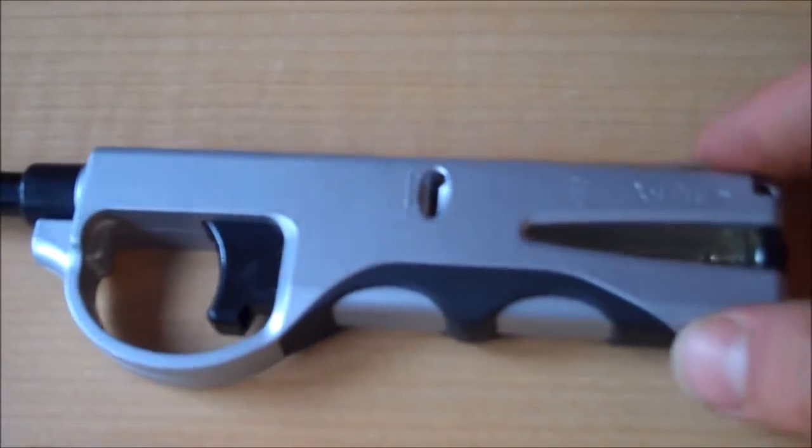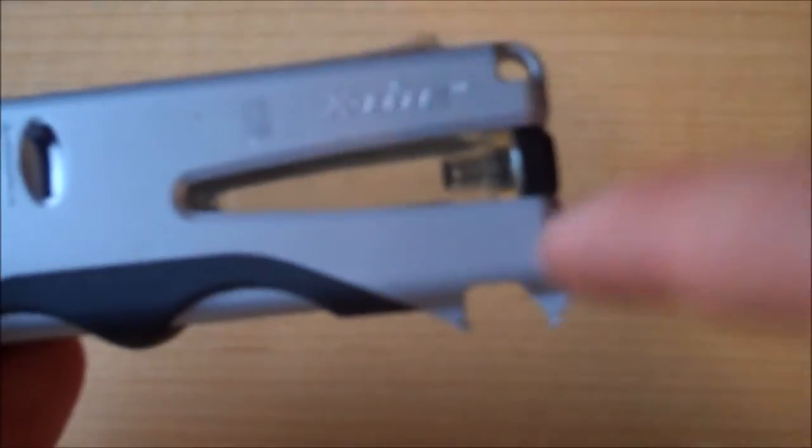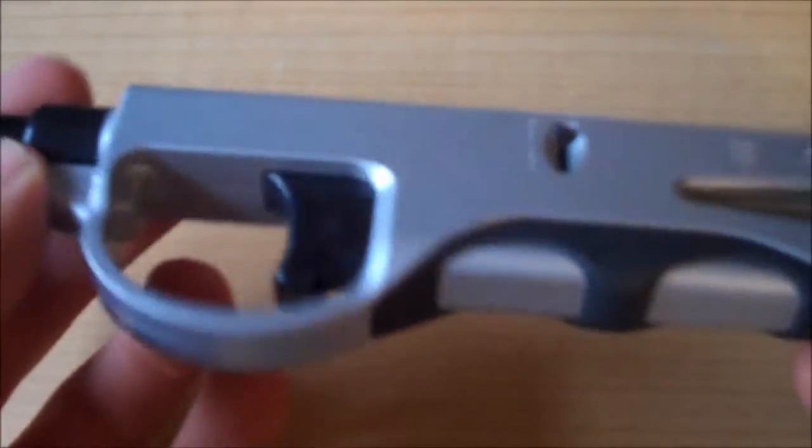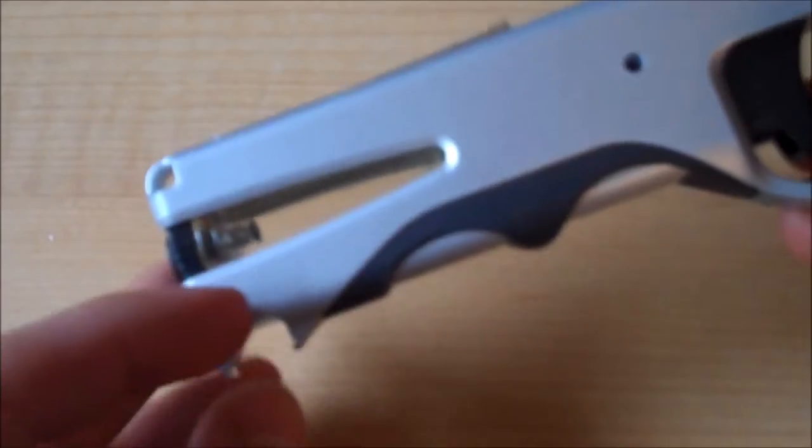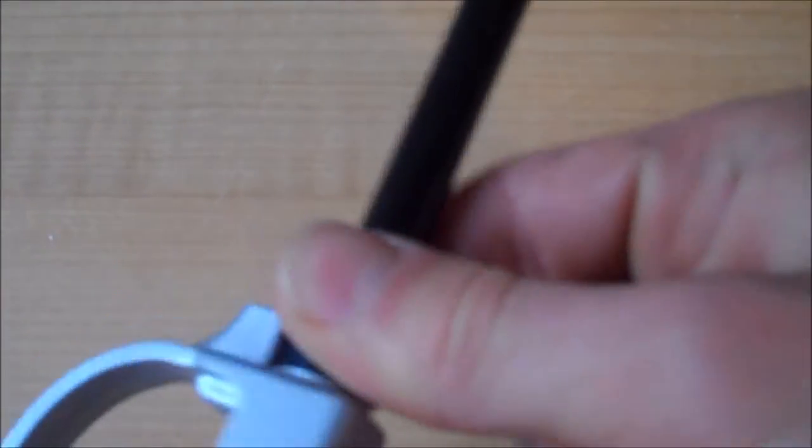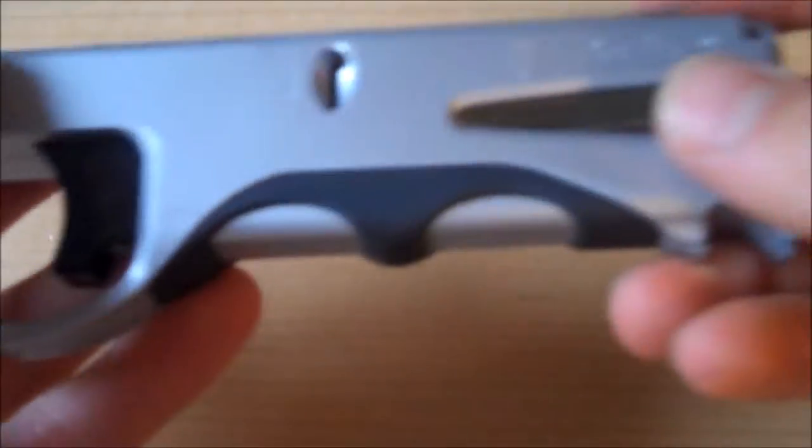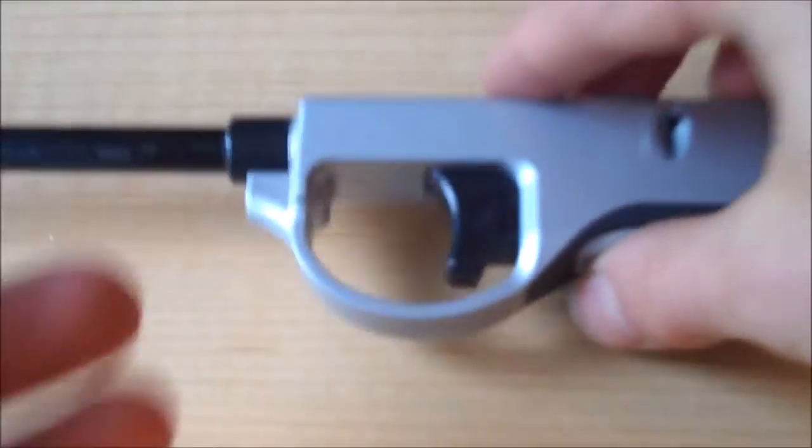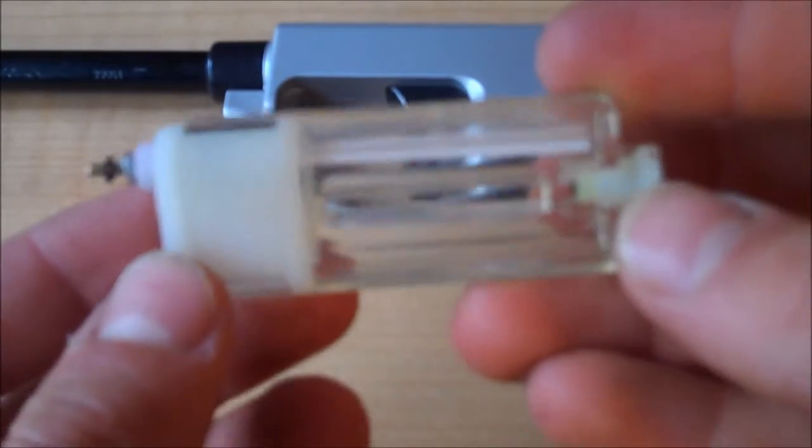First, grab your barbecue lighter, and what we're going to do here is remove the gas tank part right here. So, you may have seen in my other videos, but all you're going to do is remove the screws, take off this little cap part right here, break the lighter open, and simply take the clear square part out.